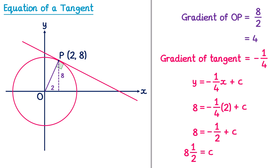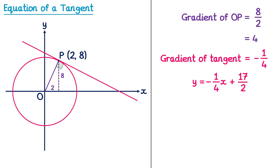It's often convenient in questions on the equation of a tangent to write this as an improper fraction, so we can convert that 8 and a half into 17 over 2. So the value of C, the Y intercept, is 17 over 2. Now we replace the C value with 17 over 2, and the equation of the tangent to this circle at the point P is Y equals negative one quarter X plus 17 over 2.